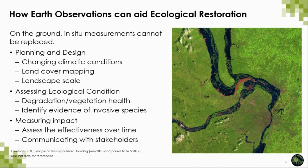Another way to use remote sensing is to assess ecological condition or extent. One can identify degradation, vegetation health, or evidence of invasive species. They can also be used to assess the impact of restoration projects or treatments over time. Additionally, they can provide ways to geographically communicate with stakeholders in management and policymaking. Earth observations can be another access point for environmental monitoring and land management data and their derived products.